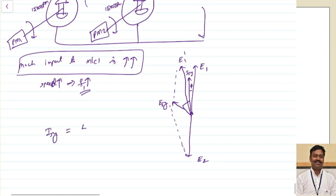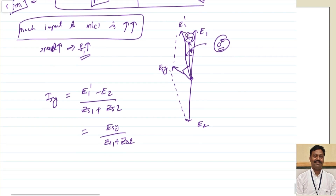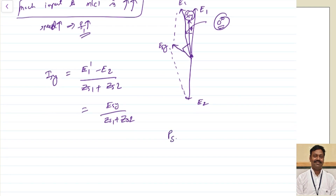Isy equals E1 dash minus E2 divided by Zs1 plus Zs2, or Esy divided by Zs1 plus Zs2. Practically, the angle difference between E1 dash and Isy is very small, so it can be taken as nearly equal to 0 degrees. Therefore the synchronizing power Ps1 equals E1 dash into Isy into cos of the angle, which is nearly 0 degrees, giving E1 into Isy.